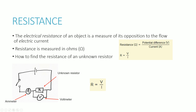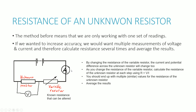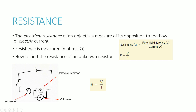For example, if voltage is 4 and the current is 2, then 4 divided by 2 gives you 2 ohms for the unknown resistor. With the previous method, we are only working with one set of readings — we connect everything up, get one result for voltage and one for current, divide them, and get the resistance.